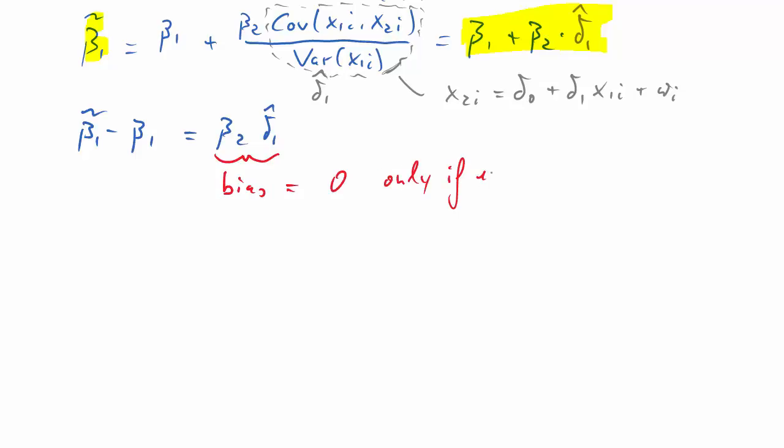That bias will only be 0 if either beta 2 is equal to 0, which means that x2 is irrelevant, or if delta 1 hat is equal to 0, which means that x1 and x2 are uncorrelated.